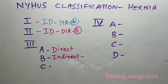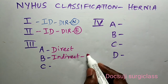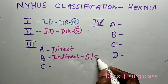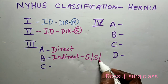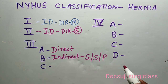Type 3B is an indirect inguinal hernia with encroachment upon the posterior wall of the inguinal canal — like a sliding hernia, scrotal hernia, or pantaloon hernia. All these extensive types of indirect inguinal hernia are seen in Type 3B.